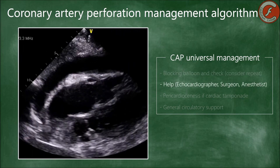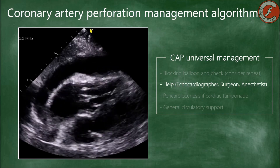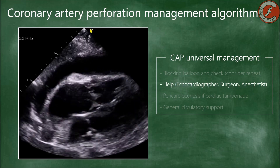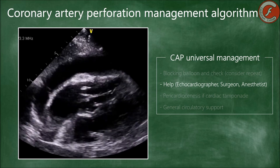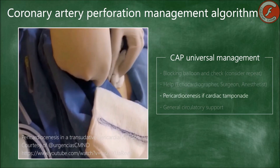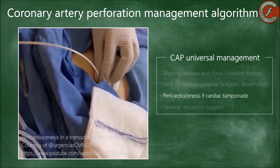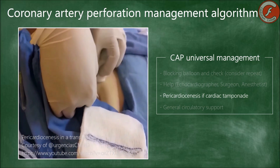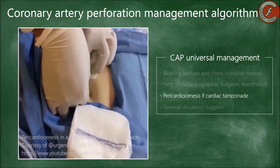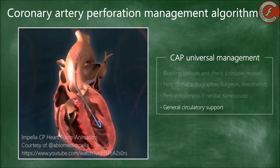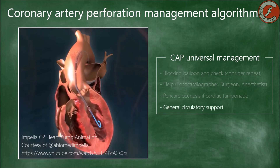In addition, it may be necessary to ask for help from the rest of the heart team, since immediate clinical evaluation and urgent echocardiography can help confirm or rule out both pericardial effusion and cardiac tamponade. In the case of cardiac tamponade, the priority should be urgent pericardiocentesis, accompanied or not by blood transfusion or reinfusion of the extracted pericardial fluid. If hemodynamic instability persists, it may be necessary to administer vasoactive amines or use circulatory support devices.